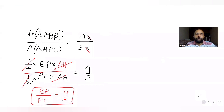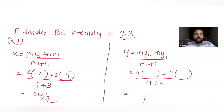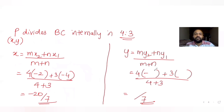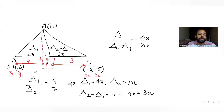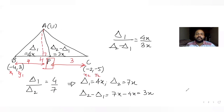Here x₁ = -4, x₂ = -2, y₁ = 3, y₂ = -5. So x = (4×(-2) + 3×(-4))/7 = (-8 - 12)/7 = -20/7. And y = (4×(-5) + 3×3)/7 = (-20 + 9)/7 = -11/7. So the coordinates of P are (-20/7, -11/7).